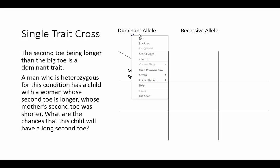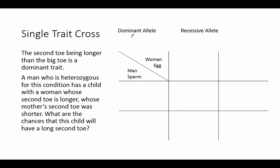The dominant allele is always the capital letter. So in this case, the dominant allele will be shown as a capital T, and the recessive allele will be shown as a small t. The dominant trait — capital T — means the second toe is longer, and the small t means the second toe is shorter.